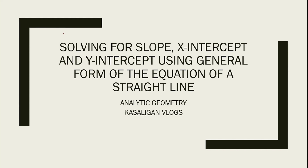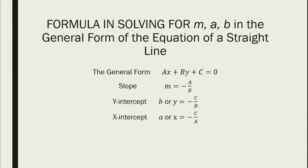Good day everyone, welcome back to my YouTube channel Casadegan Vlogs. Today we'll be talking about solving for slope, x-intercept, and y-intercept using the general form of the equation of a straight line. This is analytic geometry, and I hope that you will learn today. Let's have the formula in solving for the slope, the x-intercept, and the y-intercept in the general form, which is ax + by + c = 0.